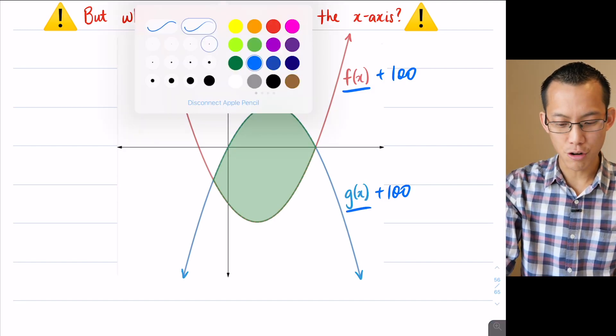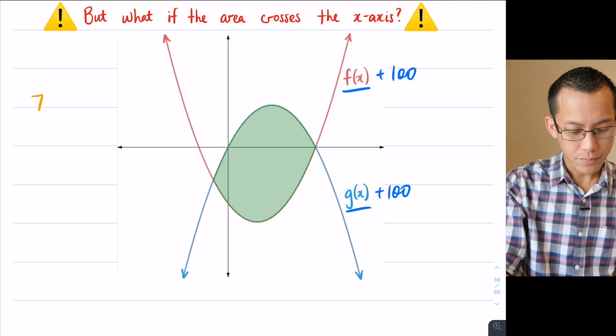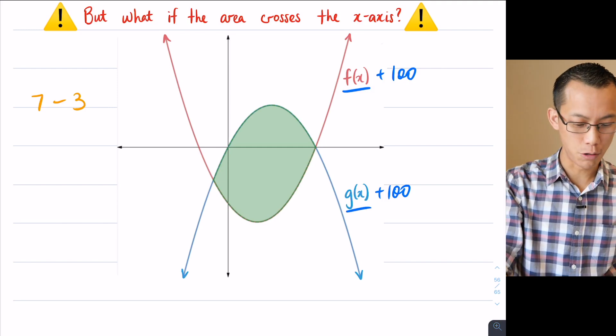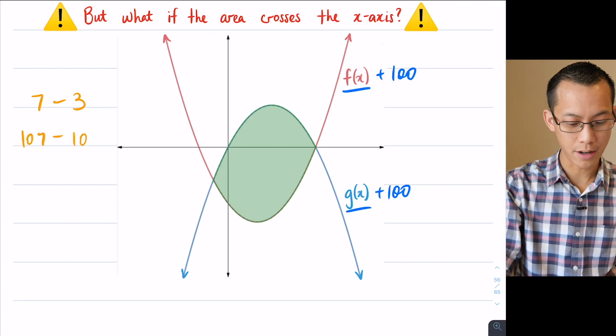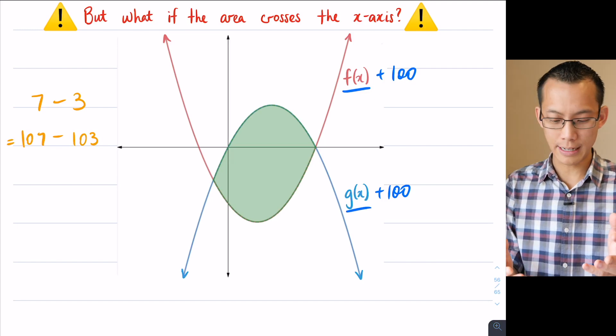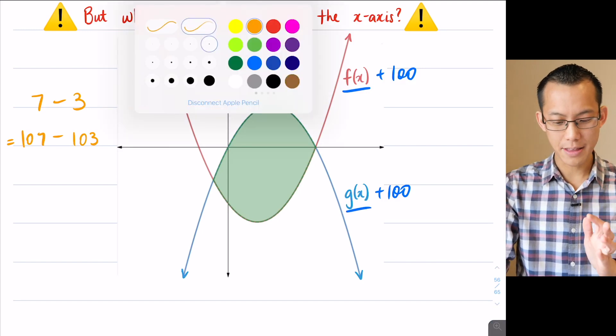I guess if you want to think about a numerical example, right? If I said, you know, what is seven takeaway three? Well, if I move both of those numbers up by a hundred, well, 107 takeaway 103, the difference between them is the same. So I can use this technique if it's helpful to me. Now watch what happens if I try this out.